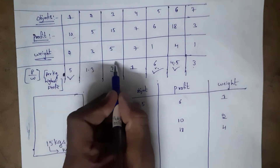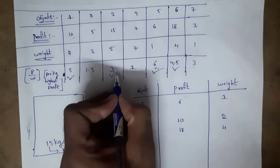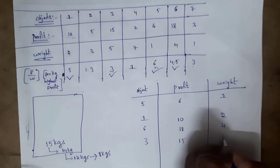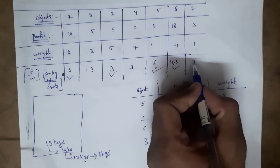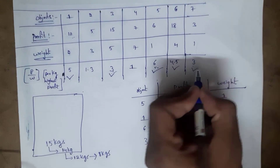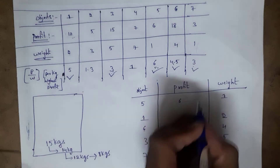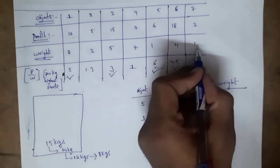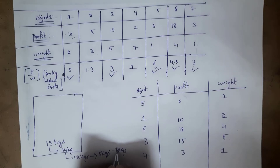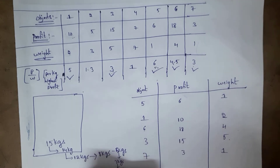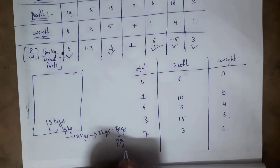Next highest profit per kg is 3. Both object 3 and object 7 have the same profit per kg, so I can select either. I select object 3 — profit is 15 and weight is 5 kg. Remaining: 8 - 5 = 3 kg. Then I select object 7 — profit is 3 and weight is 1 kg. Remaining: 3 - 1 = 2 kg.